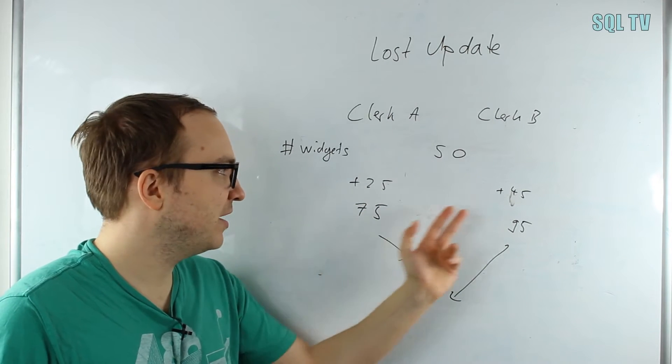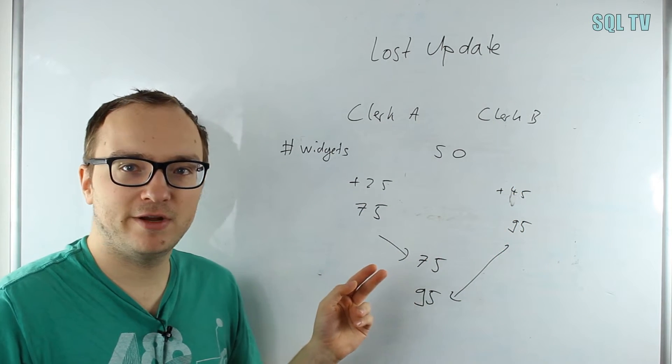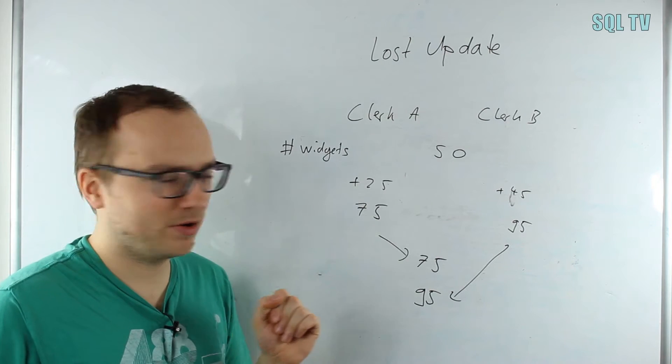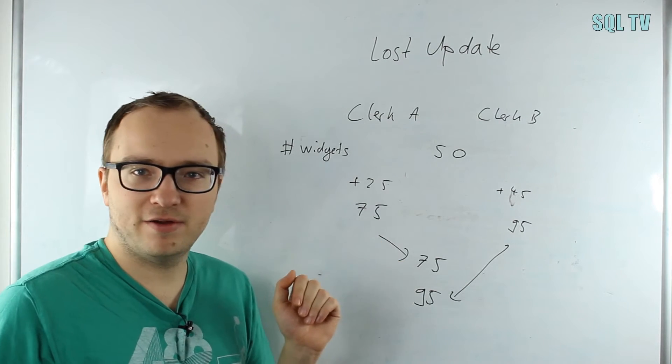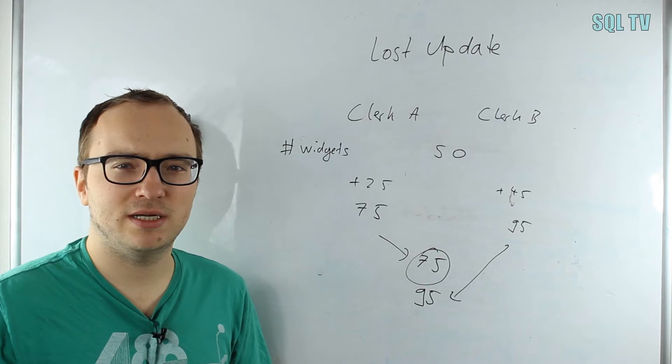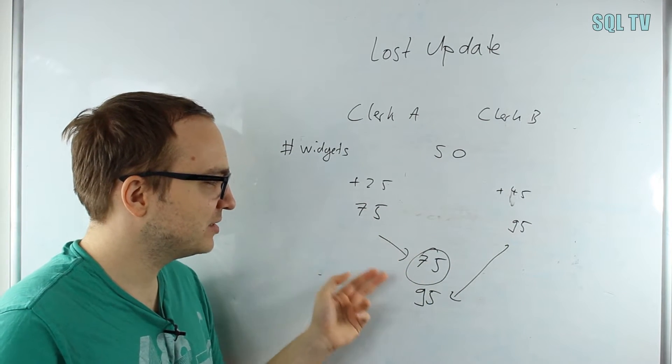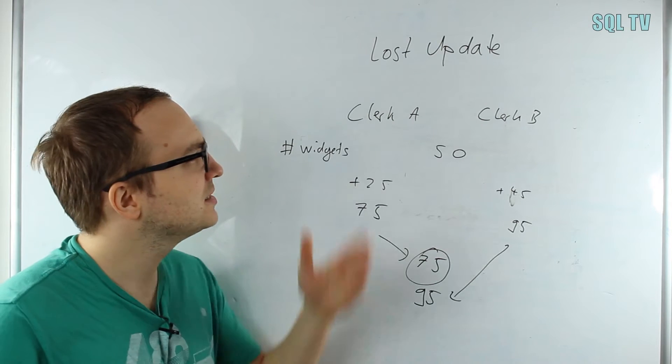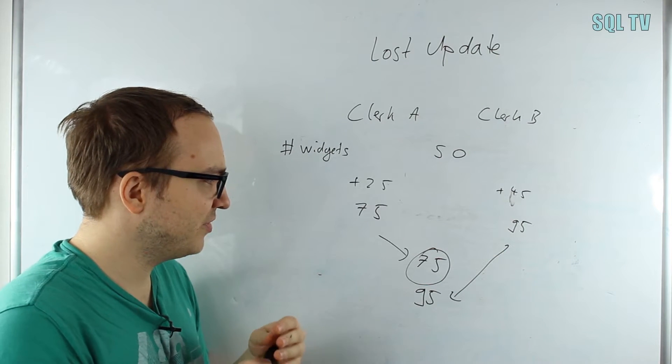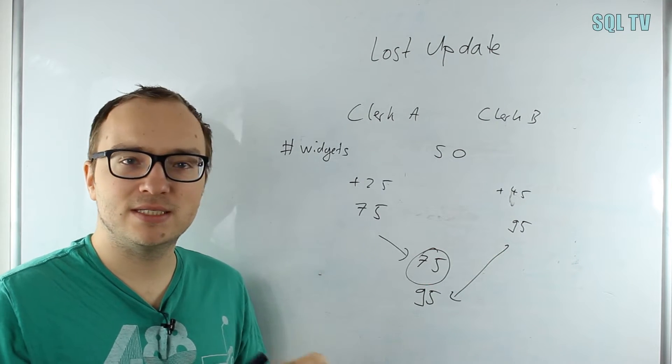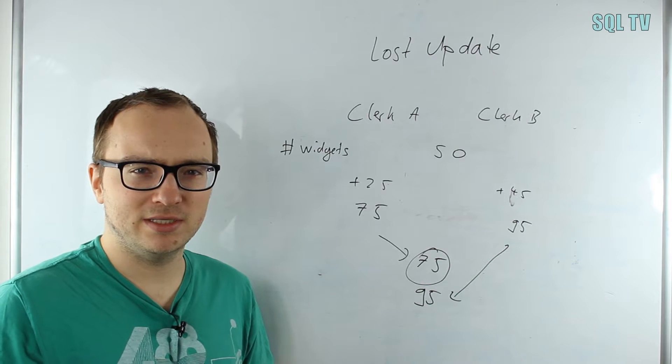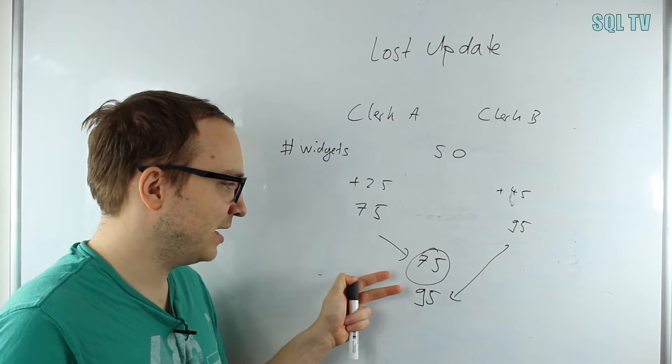Clerk A counts 50 plus 25 equals 75, clerk B counts 50 plus 45 equals 95. Now they write this back to the list, but clerk A writes 75, then clerk B writes 95. So 75 is the lost update here because they didn't rely on each other, they didn't wait for each other, they just overwrote their actions. This is called the lost update problem. I want to clarify that SQL Server does not allow this behavior. If you have this behavior, you really have an application that explicitly has this problem, because if you use an update statement, you have the update lock already on the table, eliminating this lost update problem.